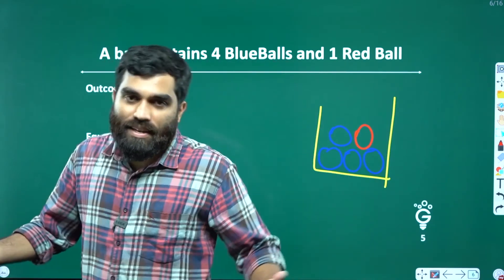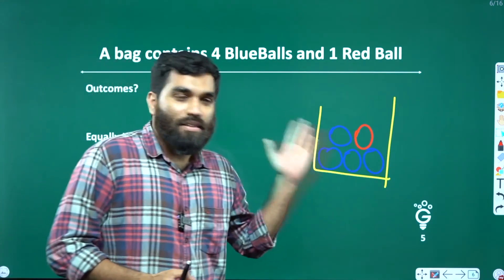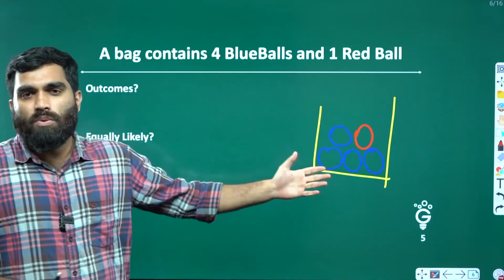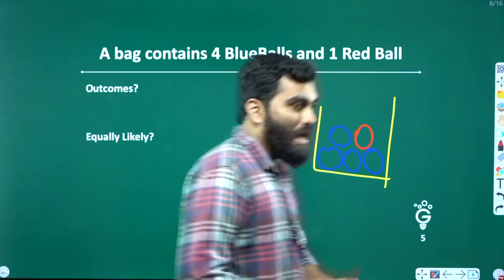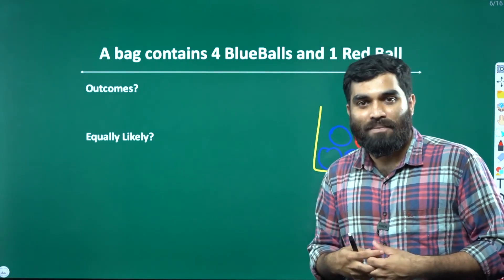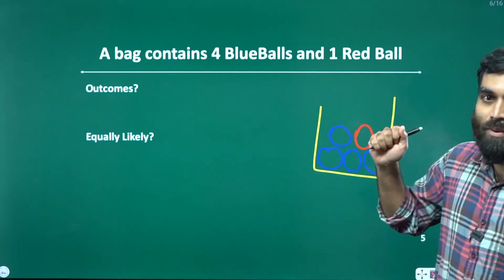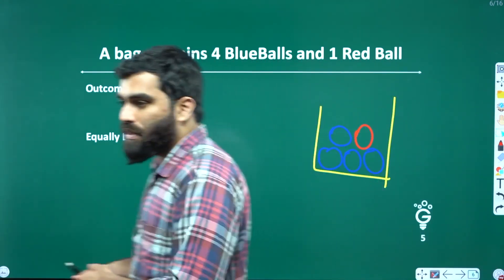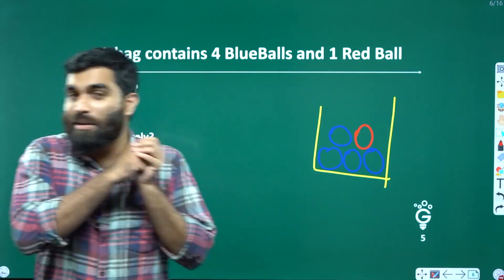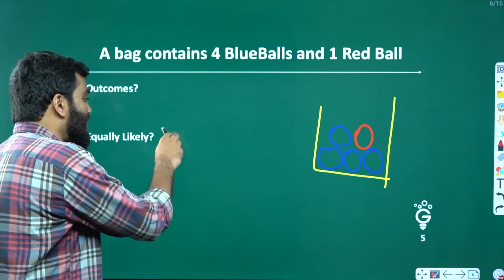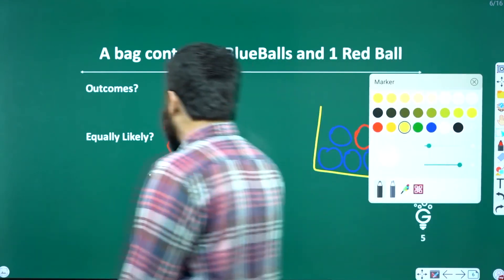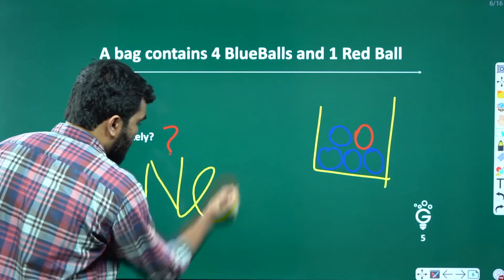You can easily answer that. The event of taking a blue ball is highly likely, because there are 4 blue balls. There is only 1 red ball. So there will be two events: blue ball and red ball. Are these events equally likely? No, they are not equally likely.